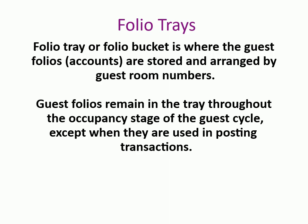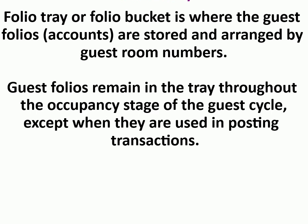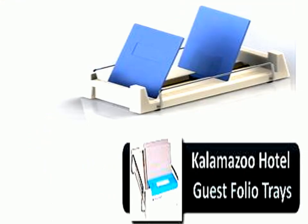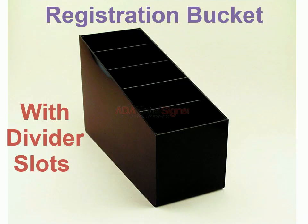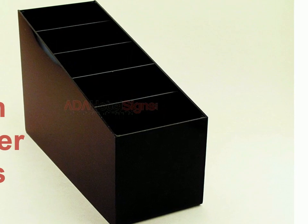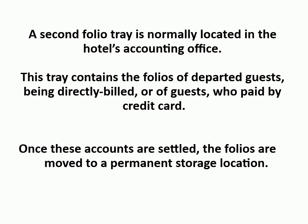Folio tray, or folio bucket, is where guest folios or accounts are stored and arranged by guest room numbers. Guest folios remain in the tray throughout the occupancy stage of the guest cycle, except when used in posting transactions. The basic idea behind all these racks, trays, and compartments is to organize and keep a large amount of things properly. A second folio tray is normally located in the hotel's accounting office, containing folios of departed guests being directly billed or who paid by credit card; once settled, folios are moved to permanent storage.